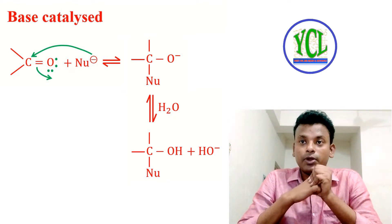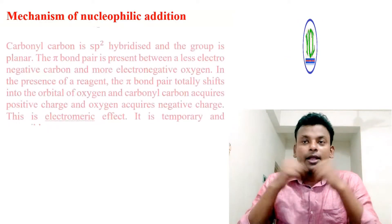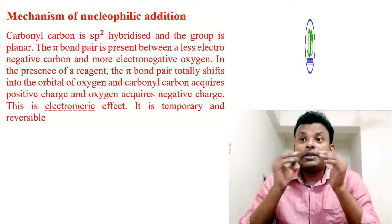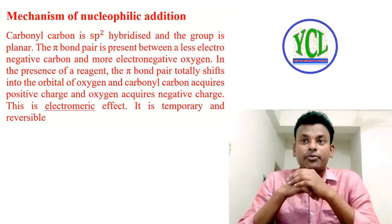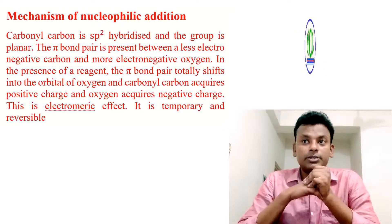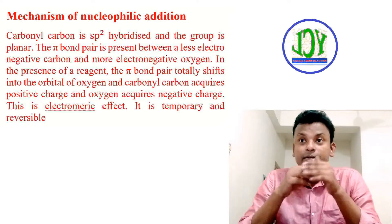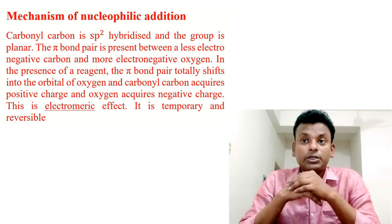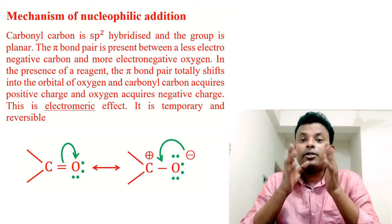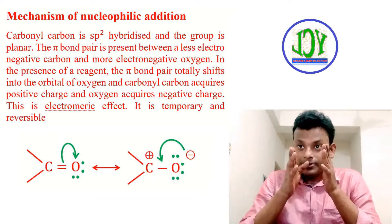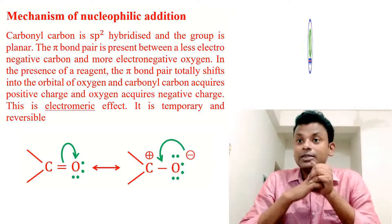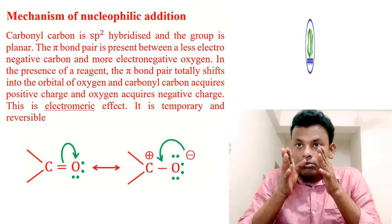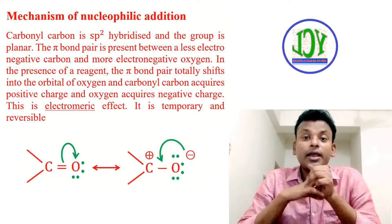The mechanism of nucleophilic addition reaction: the carbonyl carbon is sp2 hybridized and the group is planar. The pi bond pair is present between a less electronegative carbon and more electronegative oxygen. In the presence of the reagent, the pi bond pair totally shifts into the orbital of oxygen, and the carbonyl carbon acquires a positive charge. That is the resonating structure of the carbonyl group — carbon is positively charged and oxygen is negatively charged. This is the electromeric effect; it is temporary and reversible.